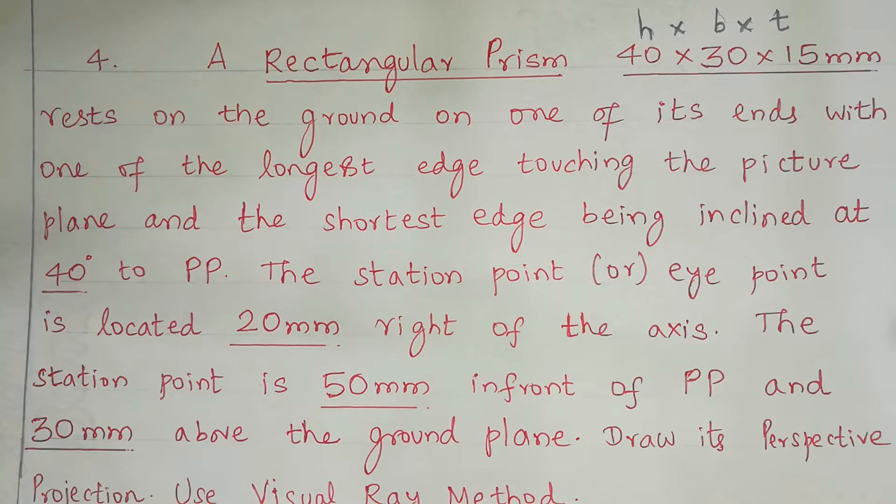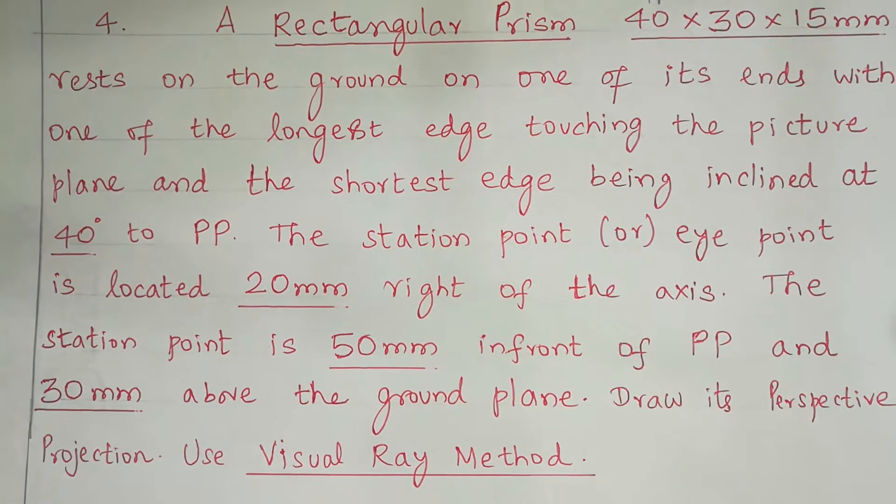The station point or eye point is located 20 mm to the right of the axis. The station point is 50 mm in front of PP and 30 mm above the ground plane. Draw its perspective projection using the Visual Ray Method.